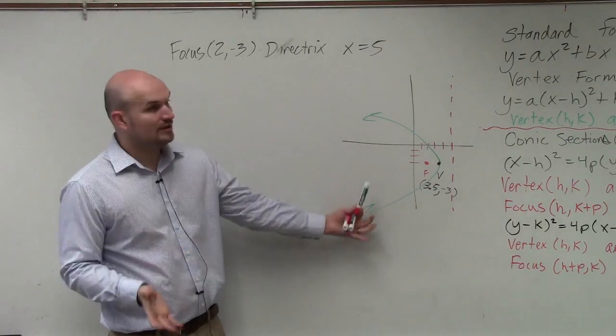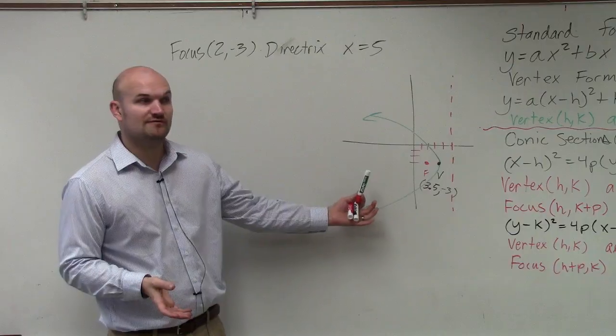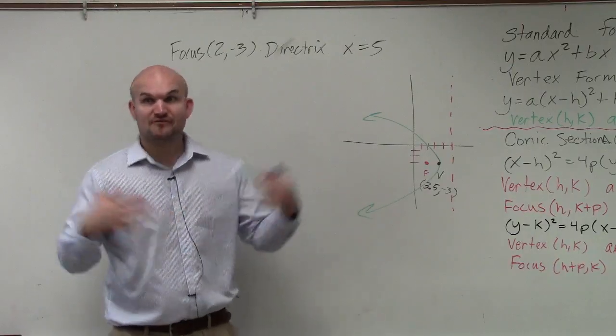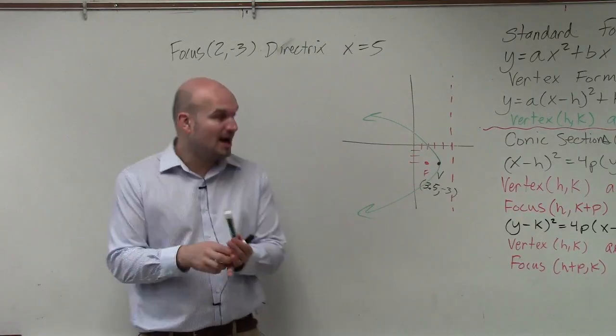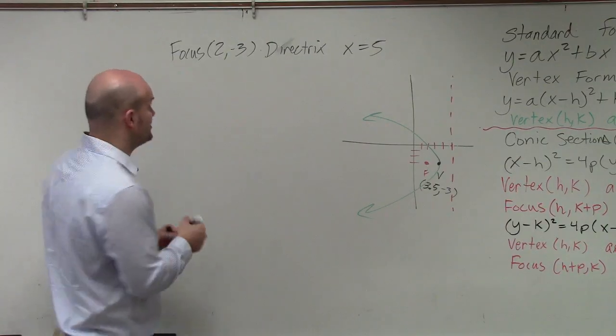The only thing I notice is, okay, now this graph is opening up horizontal, so therefore, x is not going to be squared. Because I'm familiar with the parabola where x is squared, right? So therefore, y has to be squared. So we look at our formula that we used for that.